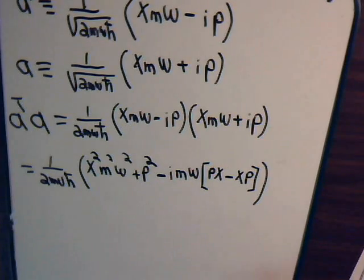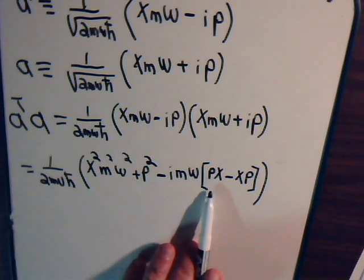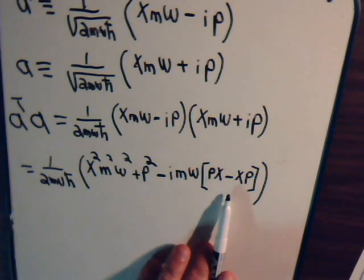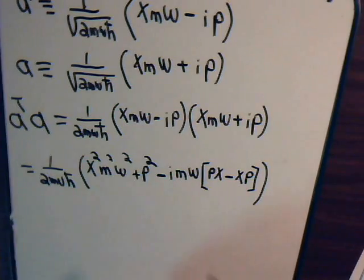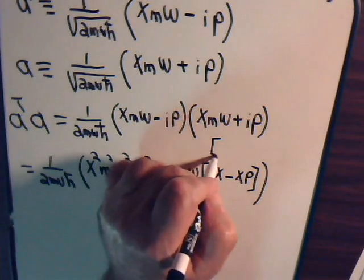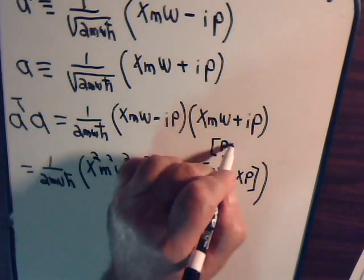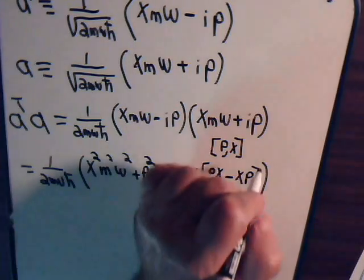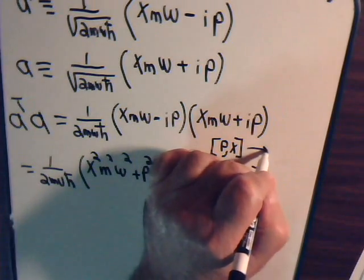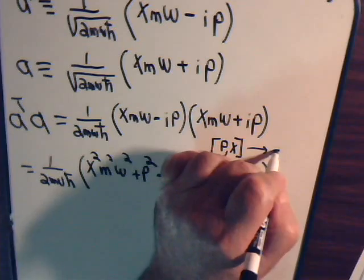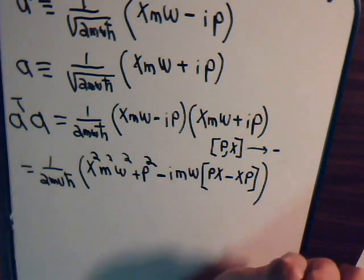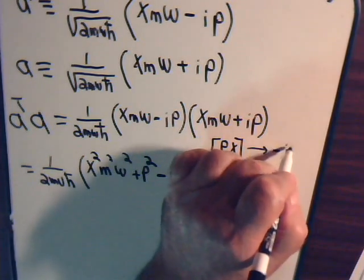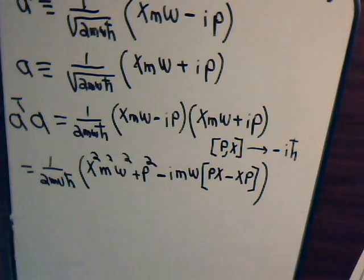So, here is what we get. Now, px minus xp. That's the same thing as the commutator of px. And we know what that equals. That is equal to minus i h bar.